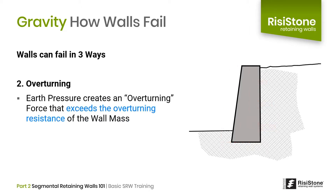The second possible way the wall can move is by overturning or tipping over. In this case, the earth pressure causes the wall to start tipping over or rotating about the toe. This is based on the concept of leverage when a force is being applied over a distance, or in this case the height of the wall. We can improve our overturning resistance by increasing the width or front-to-back depth of the wall.